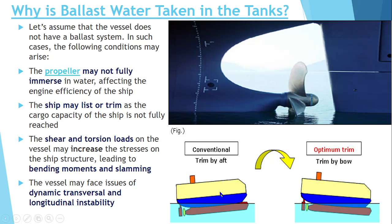Ballast water is also taken in order to maintain the optimum trim. Only if the trim is maintained properly will the propeller get immersed and you will get proper thrust. If the trim is not proper, you cannot run the engine efficiently. So the ballast water helps to optimize the trim. After that, the shear load and torsion load increase, which cause an increase in bending moment and slamming effect.